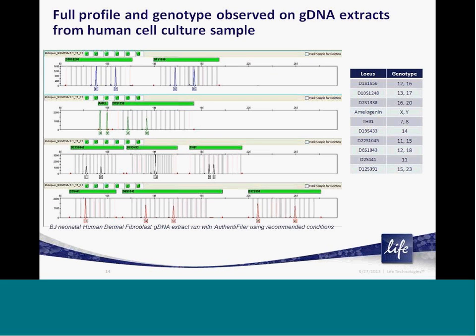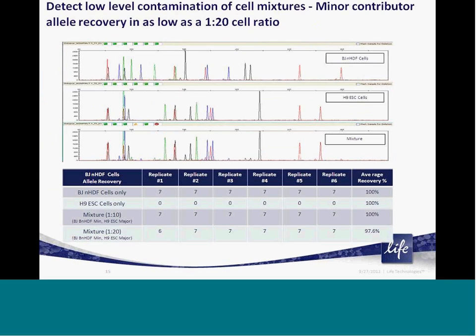Here is a full genetic profile generated from a genomic DNA extract from a neonatal human dermal fibroblast cell that was amplified and resolved using our recommended protocol. Each loci has a genotype consistent with the expected genotype for the cells. In addition, when a low level of H9 embryonic stem cell genomic DNA was added to the sample prior to PCR amplification, the Authentifiler kit is able to generate and capture the alleles from this low-level contributor at both a 1-in-10 and 1-in-20 mixture level. This high level of sensitivity can greatly help researchers when they are looking for low-level cross-contamination in their samples or cell line cultures.